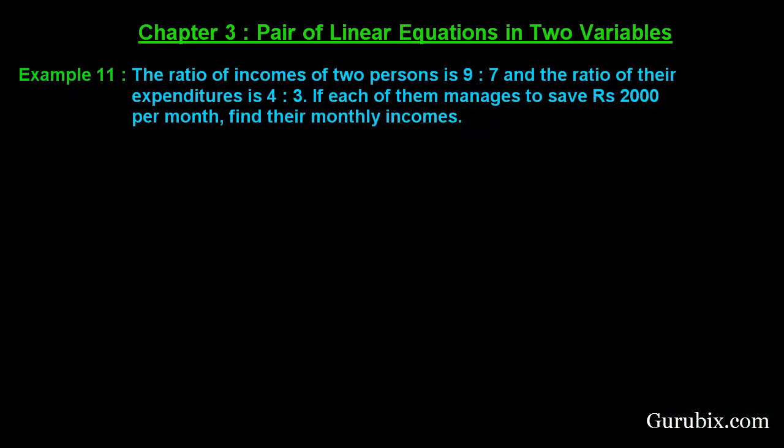Welcome friends. Let us solve example number 11 of chapter 3. The example is an application of a system of linear equations in two variables. The problem is as follows: the ratio of incomes of two persons is 9 is to 7, and the ratio of their expenditures is 4 is to 3. If each of them manages to save rupees 2000 per month, find their monthly income.